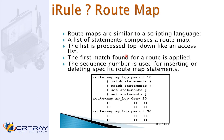Another example: iRule maps, which you may already be familiar with as route maps. Route maps are similar to a scripting language — a list of statements processed top-down, like an access list. The first match found applies the route. You use sequence numbers to insert or delete specific map statements. If a route map named 'my_bgp' is permit 10 and the match condition is met, the criteria are set — otherwise it's denied. This is more of a CCNP-level concept.